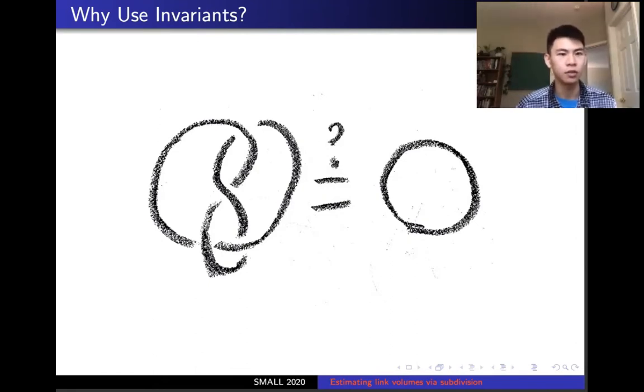To do this, we use invariants. Invariants are quantities that help us distinguish knots, but the invariants themselves are preserved under Reidemeister moves.